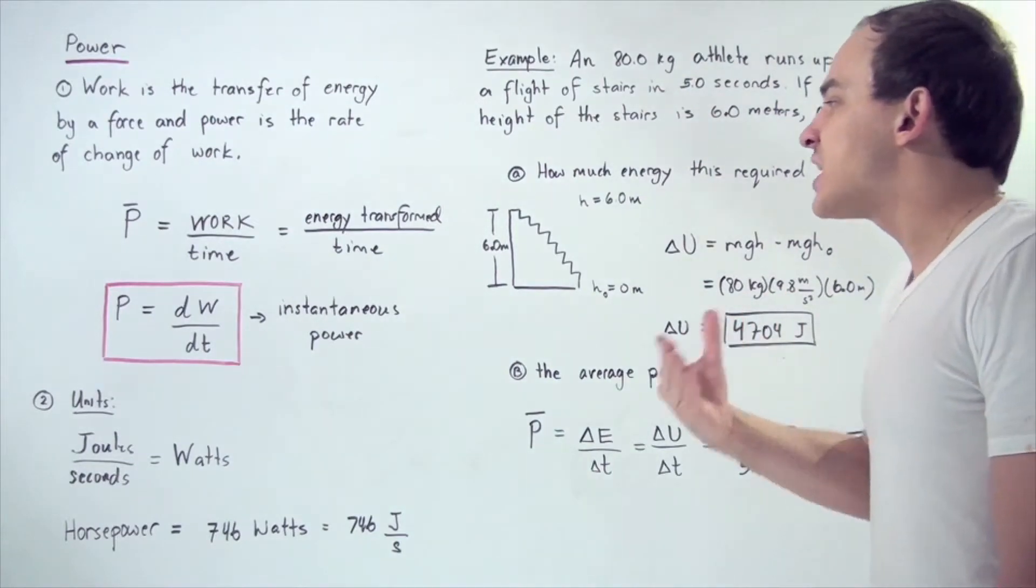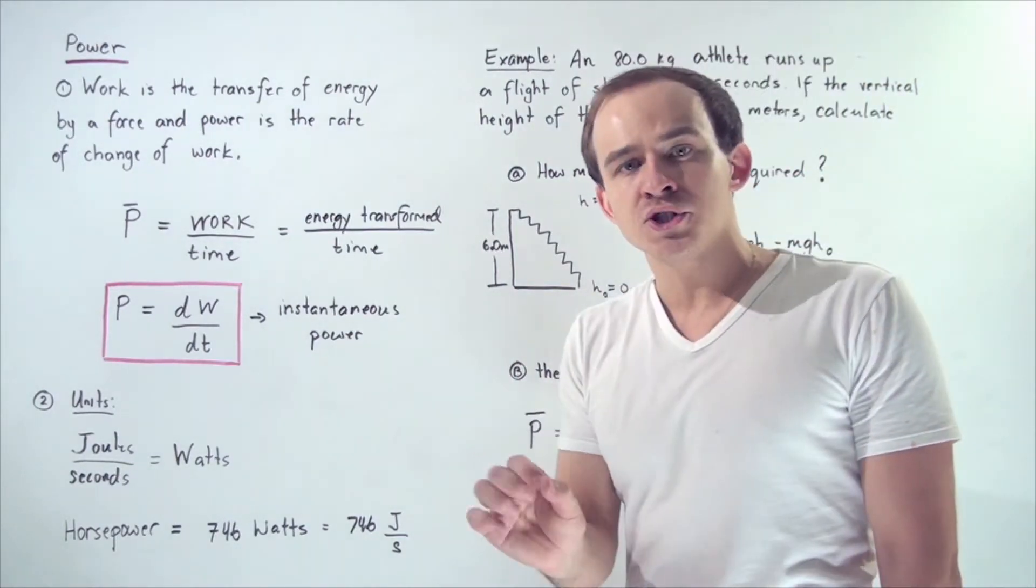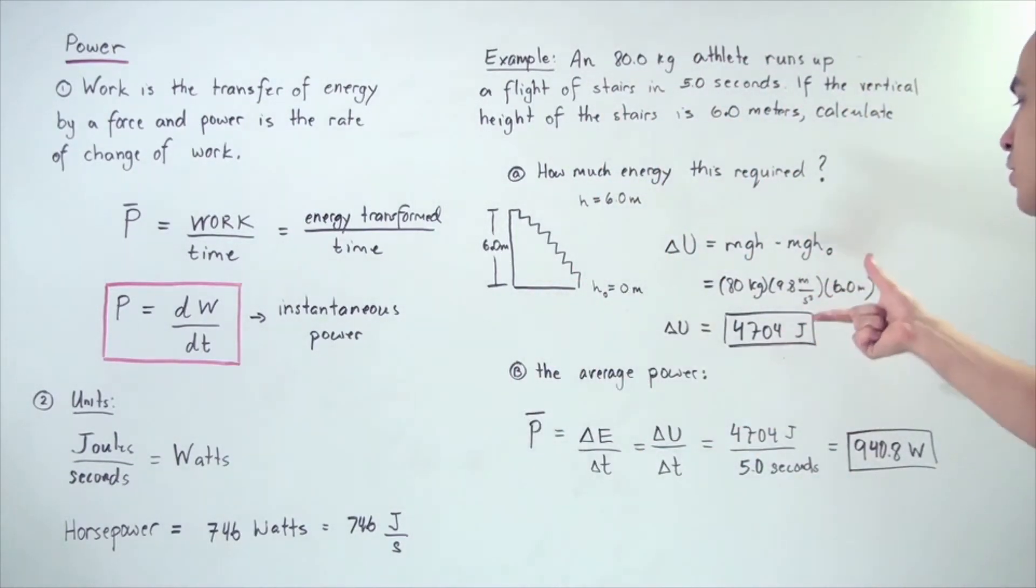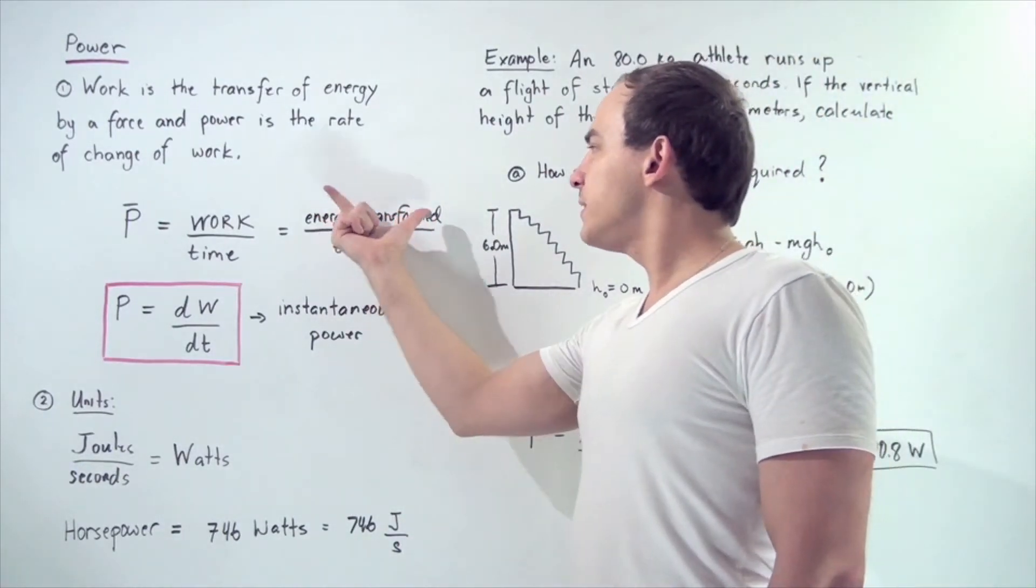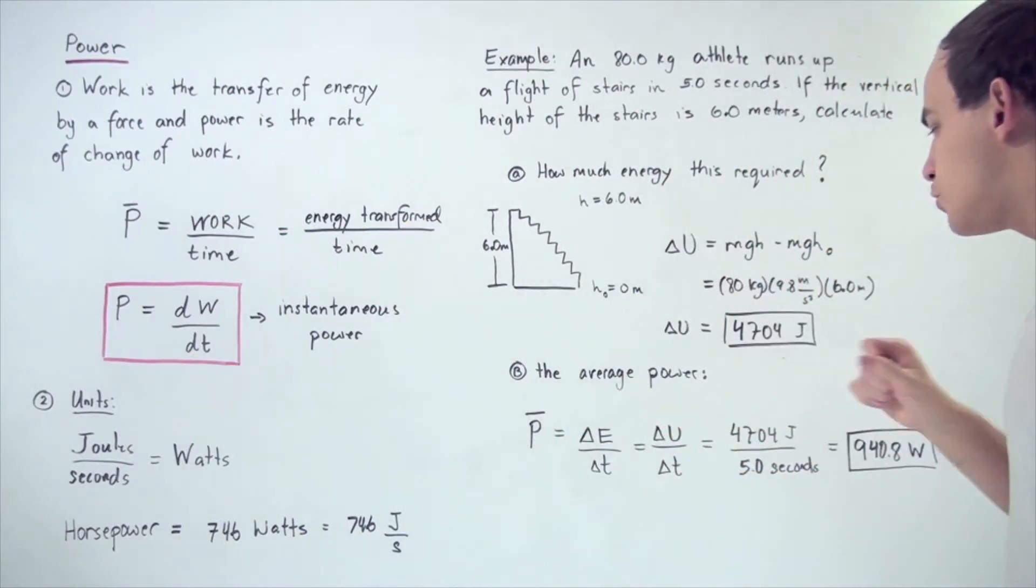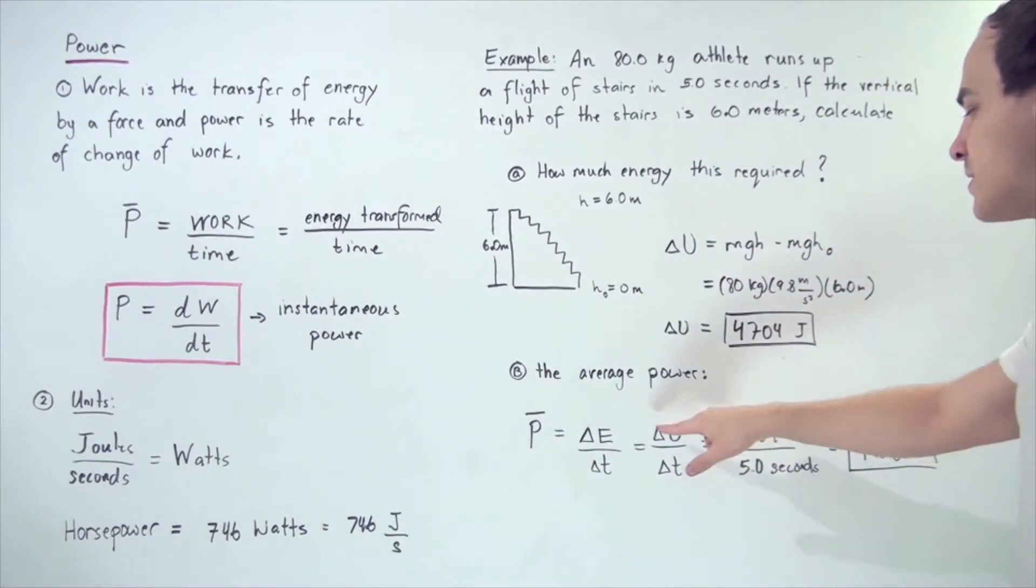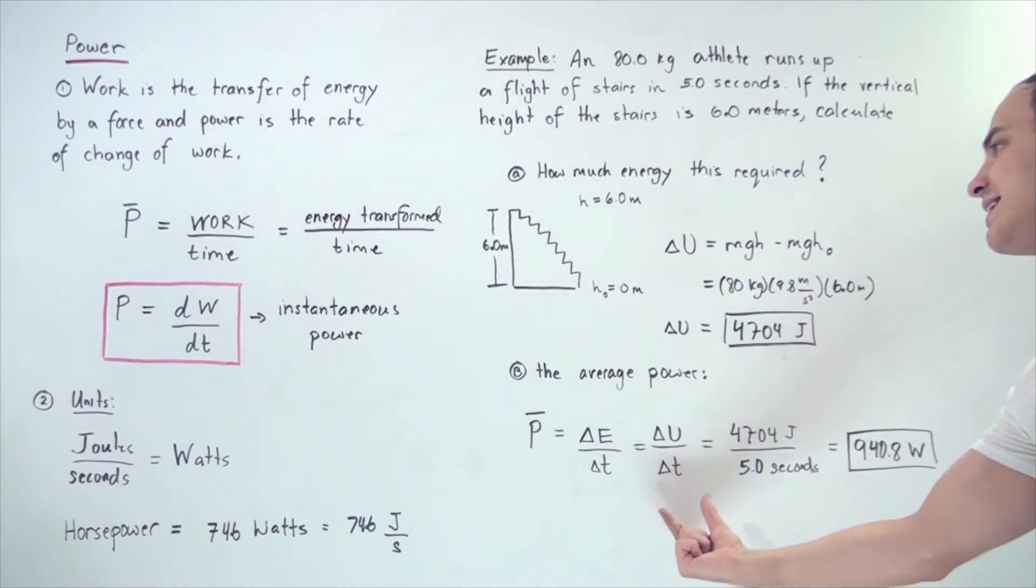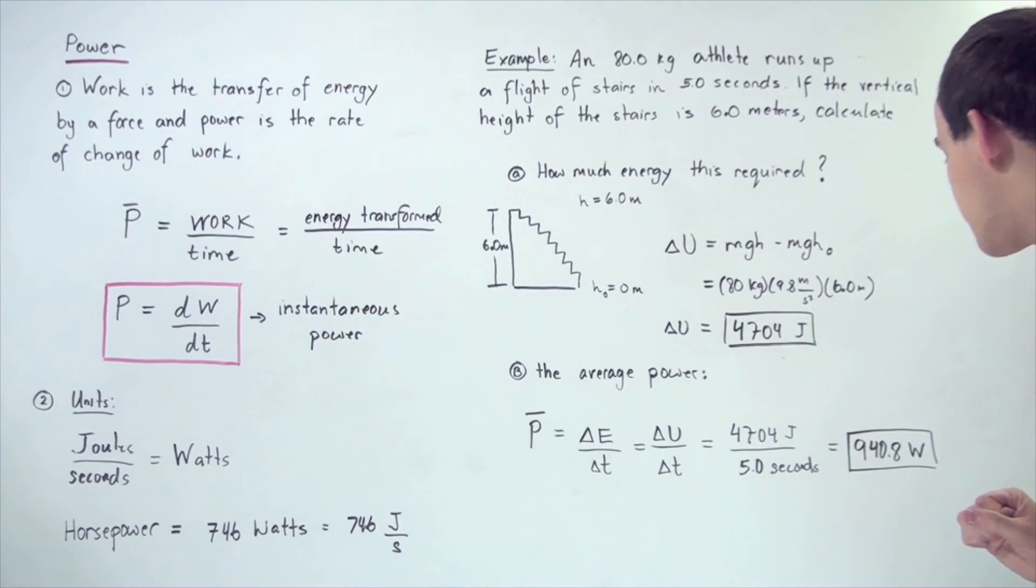We can find the average power by taking our change in energy, the change in gravitational potential energy, and dividing it by the time elapsed. Since it took 5 seconds, we have 4,704 joules divided by 5 seconds, and the average power is 940.8 watts.